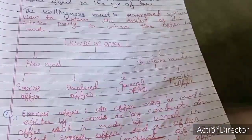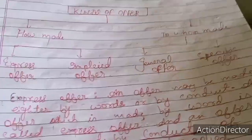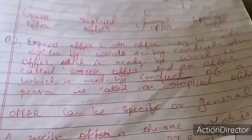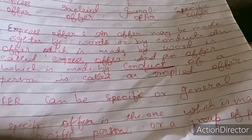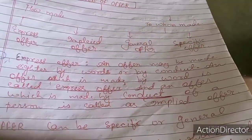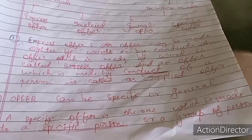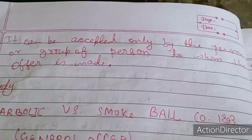Now we are discussing kinds of offer: express offer, implied offer, and offers categorized by whom they are made — general offer or specific offer. An offer made by words is called an express offer, while an offer made by conduct is an implied offer. A specific offer is one which is made to a specific person or group of persons, and it can be accepted only by that person or group.